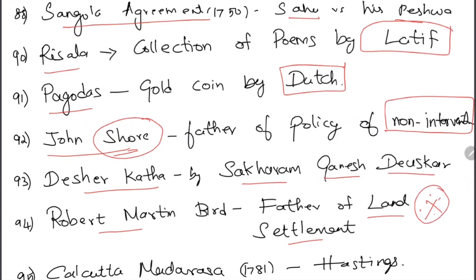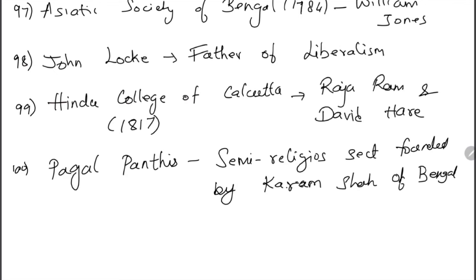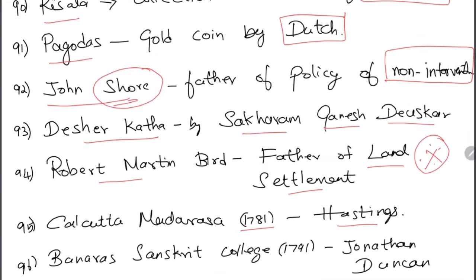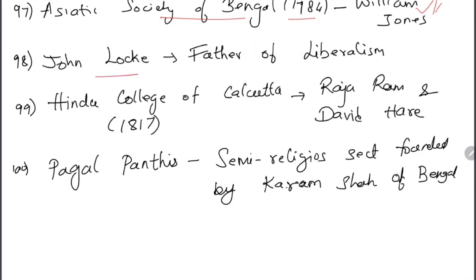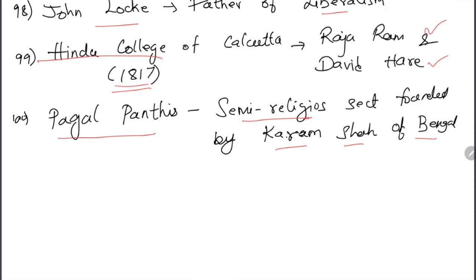Robert Martin Bird is called the father of land settlement — be careful, don't confuse this with Lord Cornwallis. Calcutta Madarasa was built in 1781 by Hastings. Asiatic Society of Bengal in 1784 by William Jones. Banaras Sanskrit College in 1791 by Jonathan Duncan. John Locke is called the father of liberalism. Hindu College Calcutta was built in 1817 by Rajaram Mohan Roy and David Hare. Pagal Panthis were a semi-religious sect founded by Karam Shah of Bengal, also fighting against British rule.